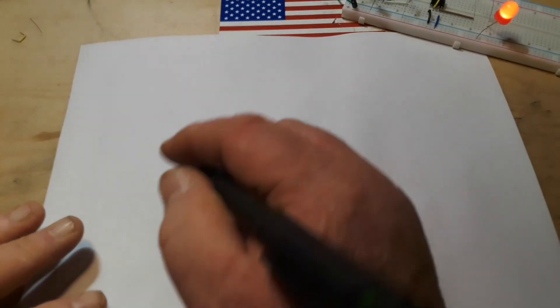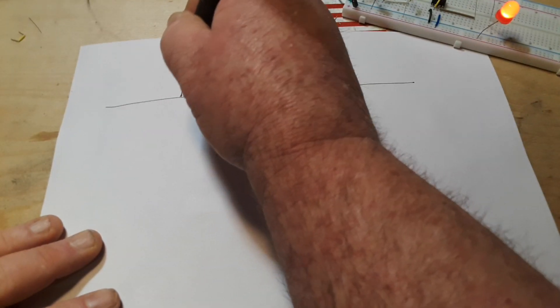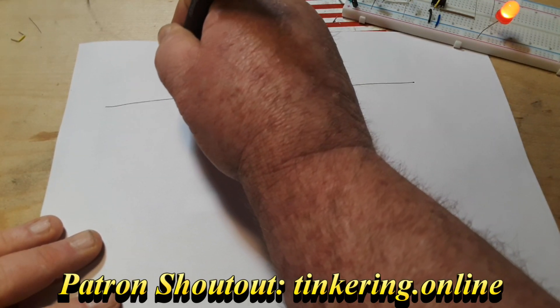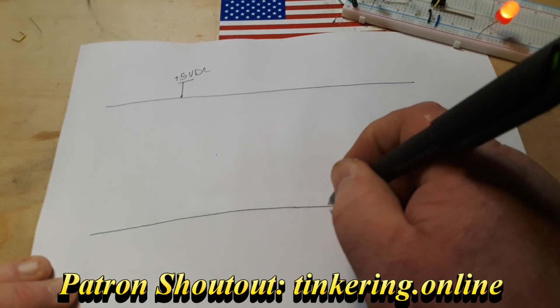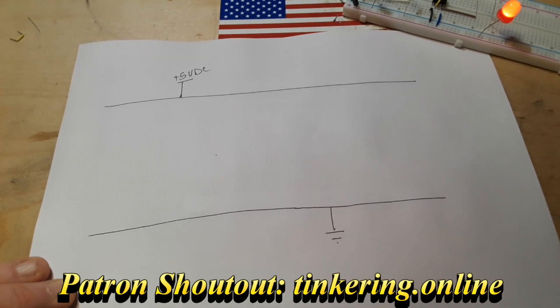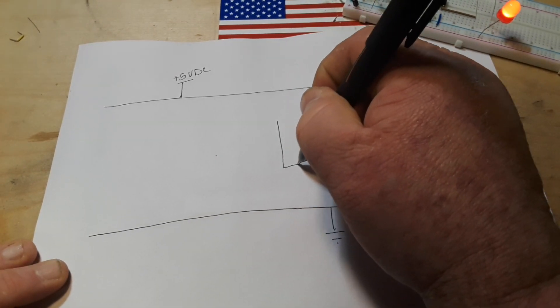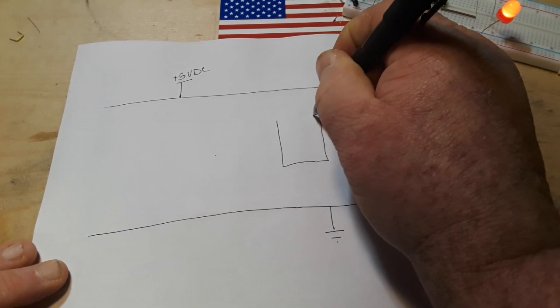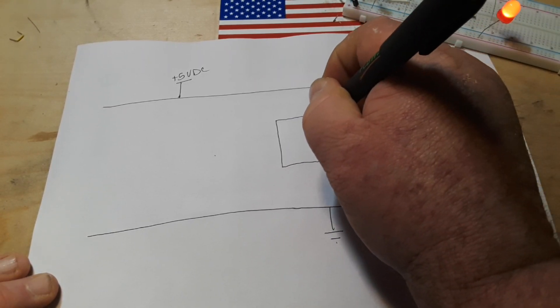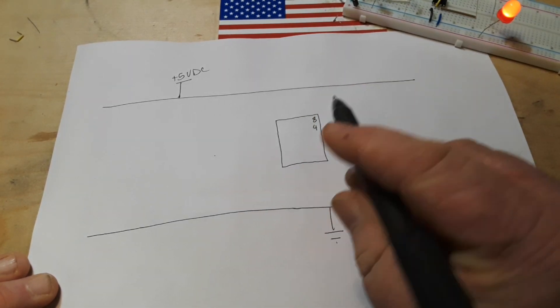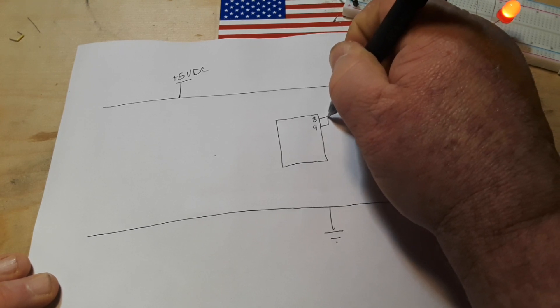Alright, so here's our circuit. This is our VCC - in this case it's +5 volts DC - and there's our ground. Let's start by drawing in our 555 timer. We're not going to be using many of the pins at all. Pin 8 and pin 4, which are our VCC and reset pins, both of those are going to get tied high, of course.